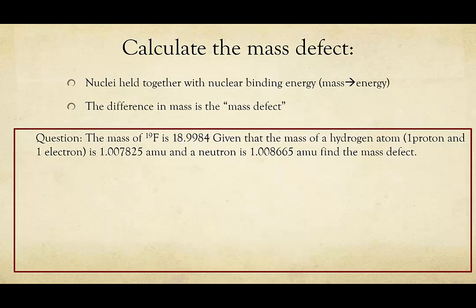Let's do a question. We will calculate the mass defect. I tell you the mass of ¹⁹F. In this case, I'm telling you the mass of the entire atom, so that includes electrons as well. I give you the mass of a hydrogen atom, or in other words, one proton and one electron, and the mass of a neutron, and I ask you to find the mass defect.